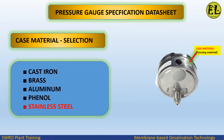Case material selection. Options include cast iron, brass, aluminum, phenol, and stainless steel. We select stainless steel as the case material for this application.